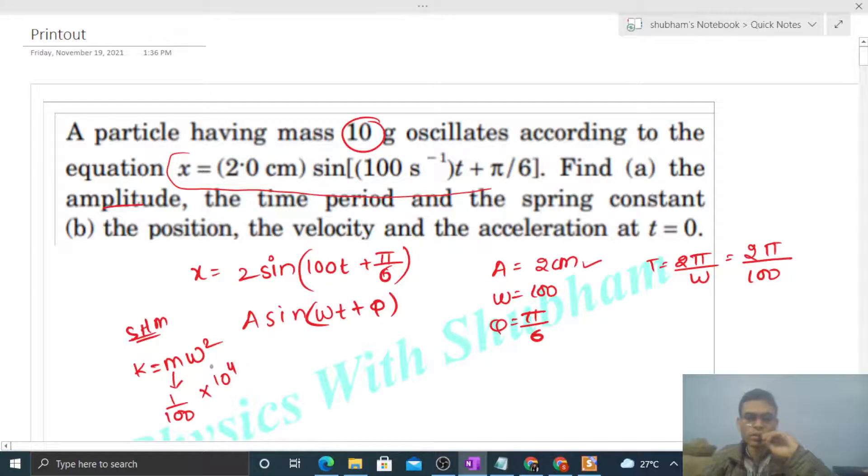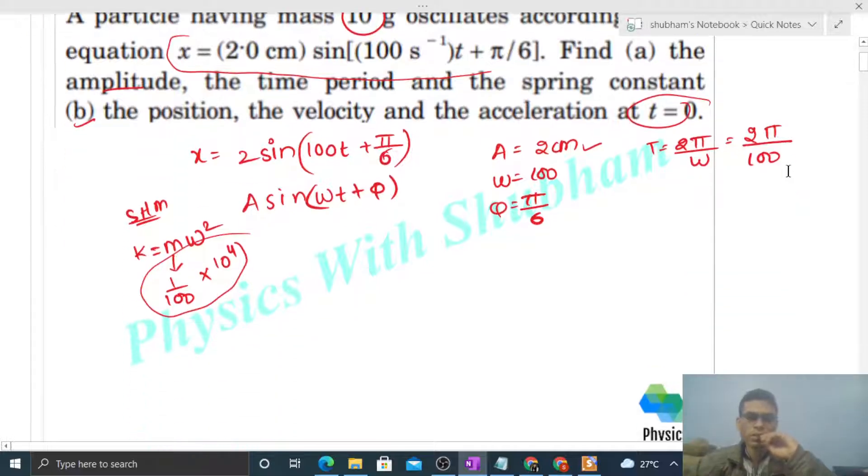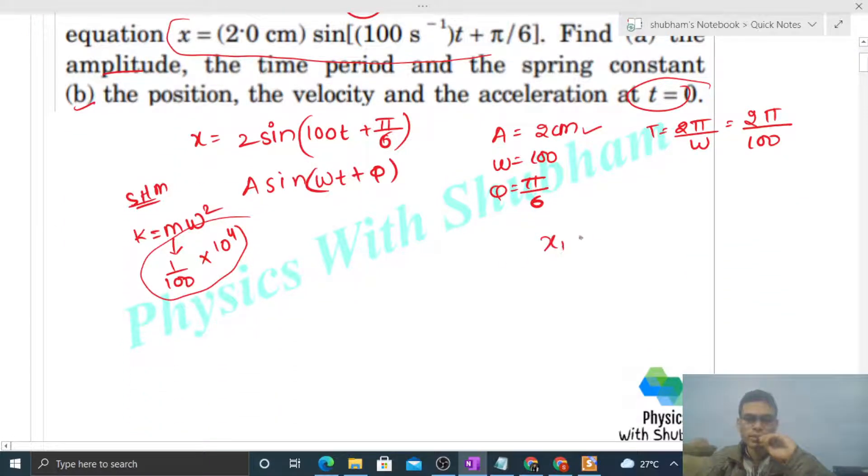Now let's check part b: the position, the velocity, and the acceleration at time t = 0. So we have to find the value of x, v, and acceleration at time t = 0. You can see the equation is given.